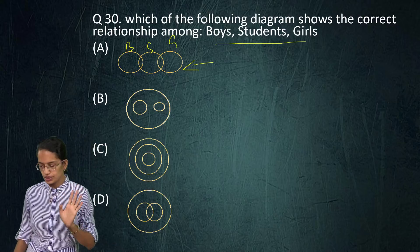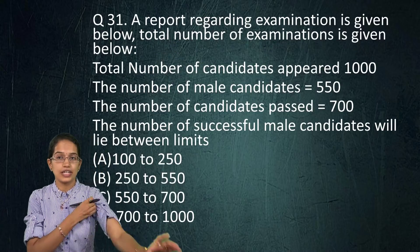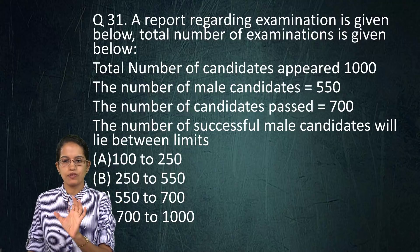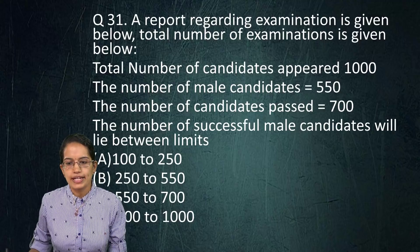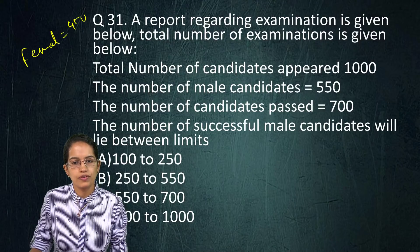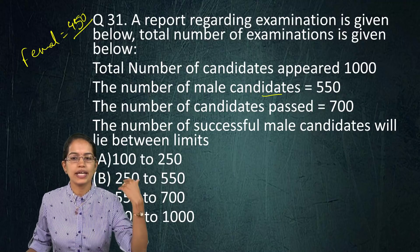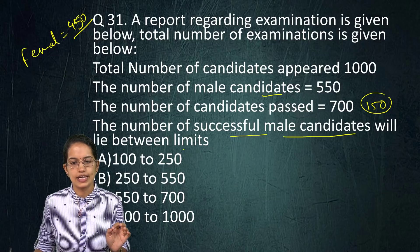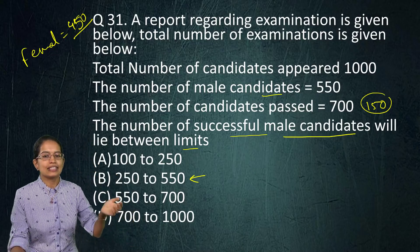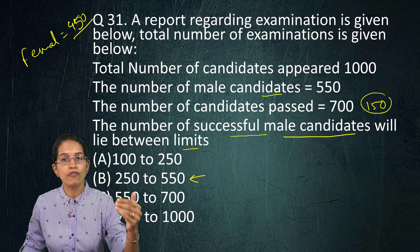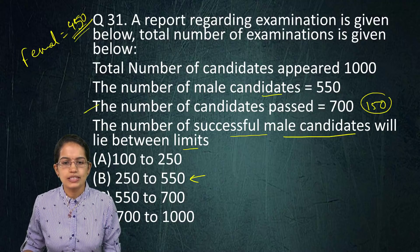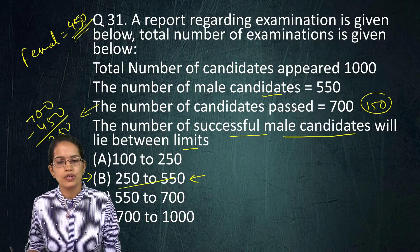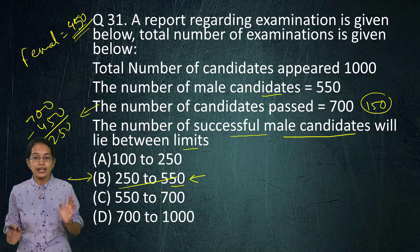Here is a very logical question on maxima and minima. Total candidates: 1,000; male candidates: 550; female candidates: 450; passed candidates: 700. Case 1 — if all male candidates pass, female candidates passing = 150. Case 2 — if all female candidates pass (450), remaining passed = 700 minus 450 = 250 males. So the range of successful male candidates is 250 to 550.